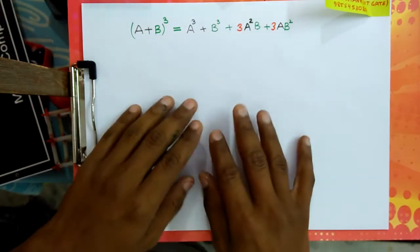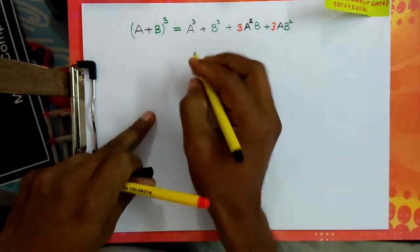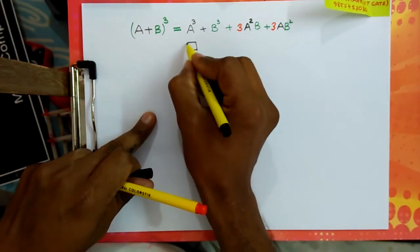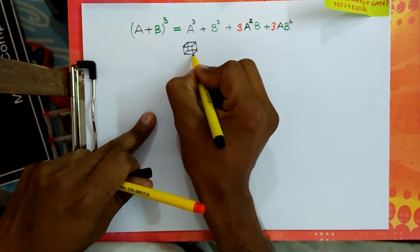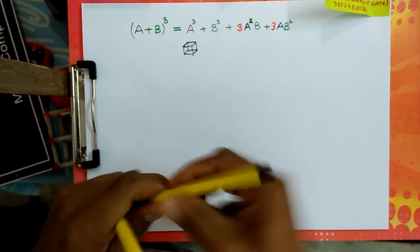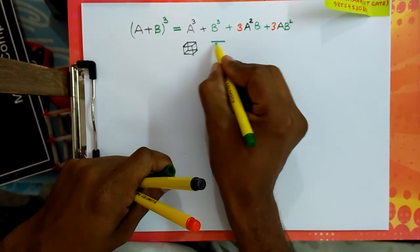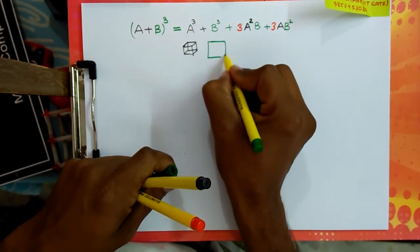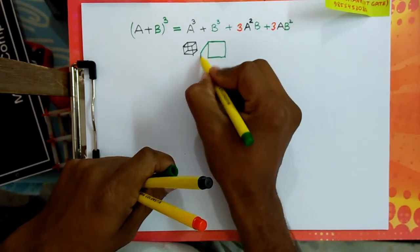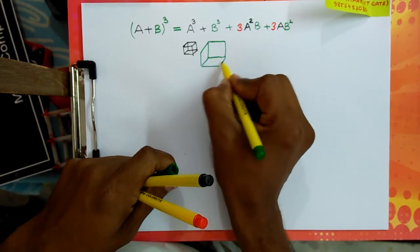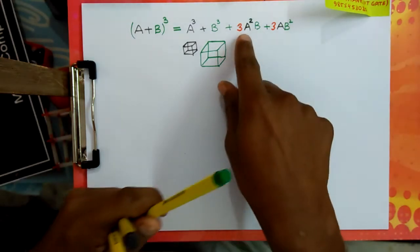Let us have a clear picture of this. 'a cube' simply means that there is a cube of side a. And 'b cube' means that there is another cube, maybe bigger or maybe smaller, and that cube has each side of length b.